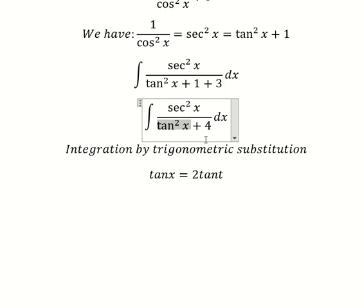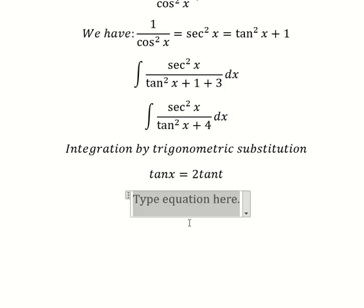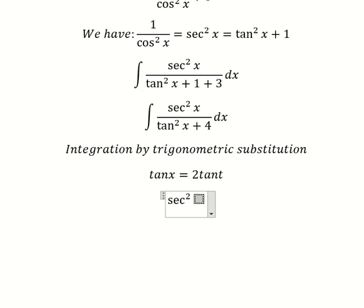Tan t squared plus one we change to secant of t squared and that will simplify. Now we need to take the first derivative for both sides and we have like this.